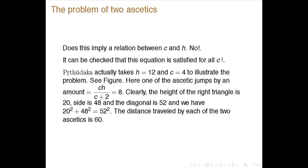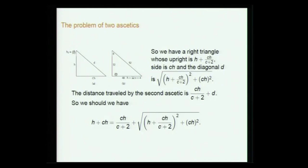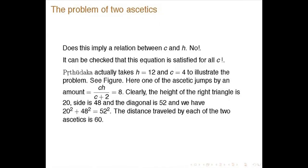Prthudakasvami takes H = 12 and C = 4 to illustrate. The height is 12 and the wizard jumps CH/(C+2) = 12×4/6 = 8. The distance of the town from the base is 48. The height of the right triangle is 12+8 = 20, and the diagonal is 52. One ascetic travels 12+48 = 60; the other travels 8+52 = 60. They are equal — a nice application of the right triangle.